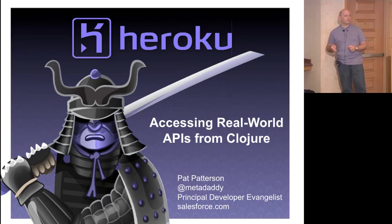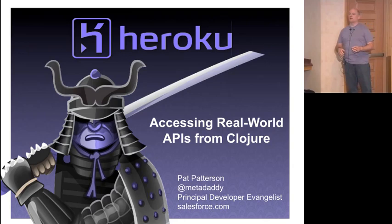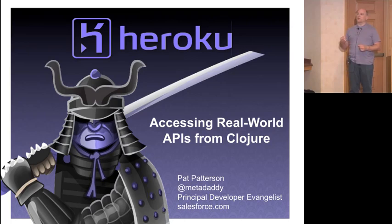This is not a pitch for Heroku — I think Micah in the last session probably talked more about Heroku than I will. What I'm really going to talk about is how to access real-world RESTful APIs from a Clojure application, and in particular some of the identity-related issues in doing so.